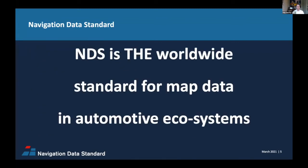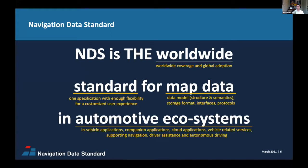Since this webinar is about NDS Live, I'll quickly introduce NDS and the NDS Association. NDS is short for Navigation Data Standard — the worldwide standard for map data in automotive ecosystems. NDS maps work globally and are globally adopted. NDS offers a well-defined spec for how to store map data, allowing flexibility for customized user experiences. The specification covers the data model, storage format, interfaces, and protocols. NDS is for in-vehicle navigation, ADAS, mobile companion apps, connected car cloud solutions, and automated driving. It evolves with the market as NDS is for the automotive industry, by the automotive industry.